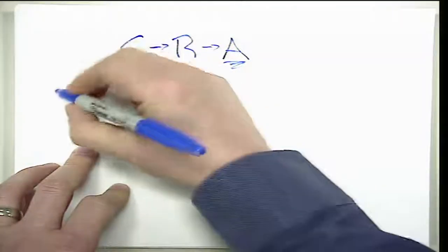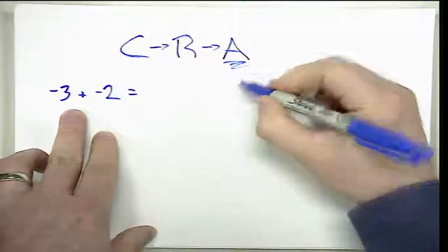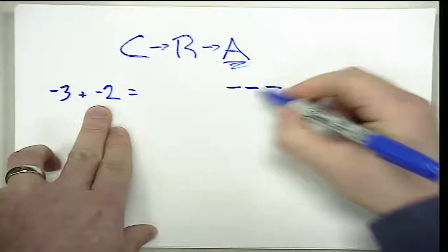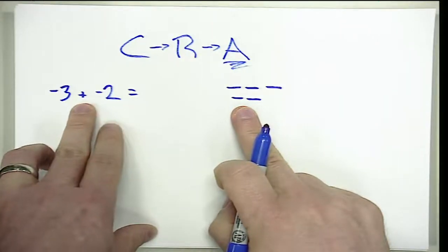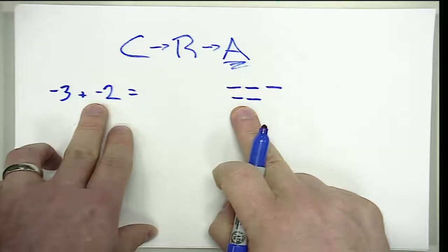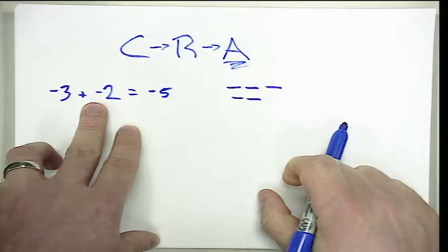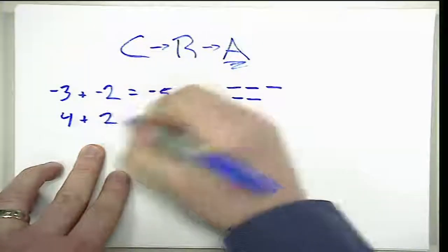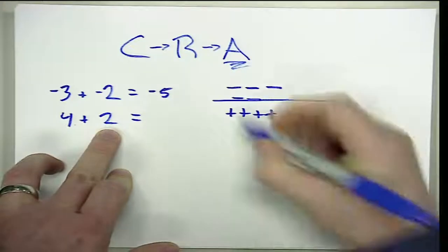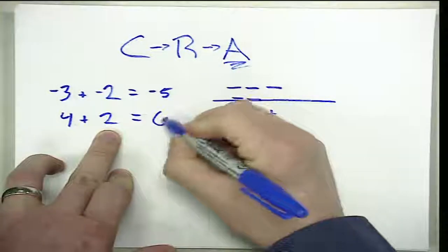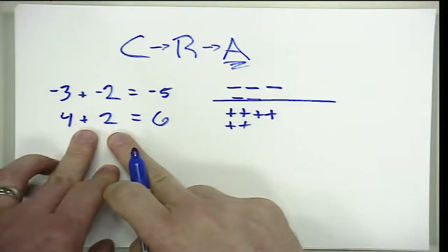If we're thinking about adding the same signs — say negative 3 plus negative 2 — we model that with three negatives and put with that two more negatives. Adding negatives to negatives just gives us more negatives, so we have two groups of negatives that together give us a larger group: negative 5. Similarly, 4 plus 2 would be four positives adding two positives, giving us six positives. You can see how these models justify the rule that when adding the same signs, we add the absolute values and the sign remains.